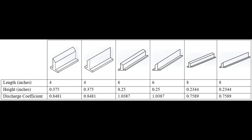This table shows the calculated discharge coefficients for the 4-, 6-, and 8-inch weirs, both upstream and downstream. As you can see, there is no effect in the direction of the weir on the height or discharge coefficient, only length.